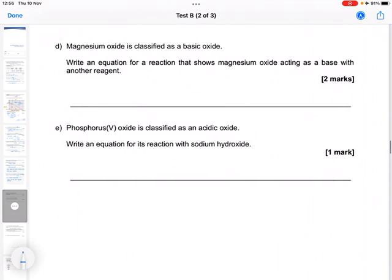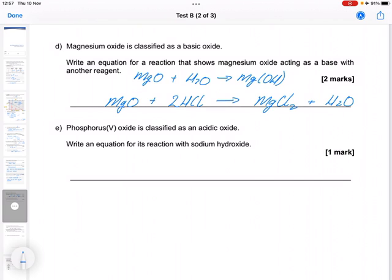D: Magnesium oxide is classed as a basic oxide. Write an equation for a reaction that shows magnesium oxide acting as a base with another reagent. So magnesium oxide with hydrochloric acid forms magnesium chloride. Metal and acid makes salt and water. This needs balancing. You could do a reaction with water if you wish. So magnesium oxide plus water gives Mg(OH)2.